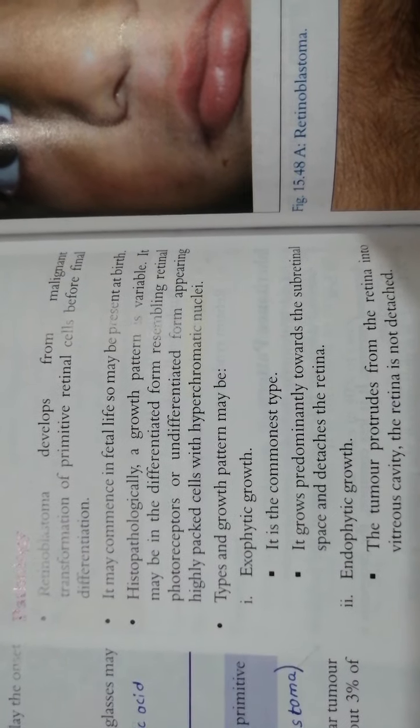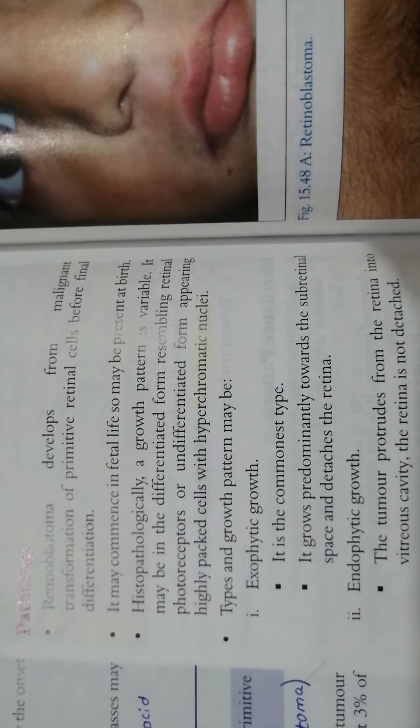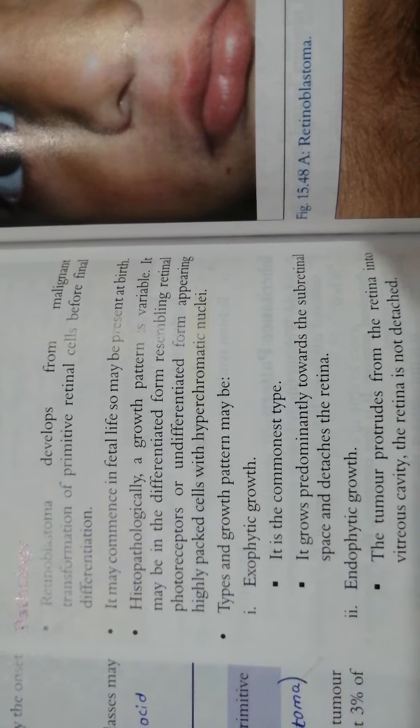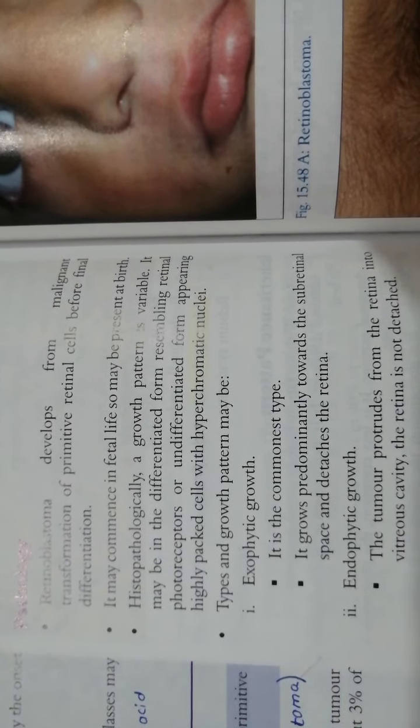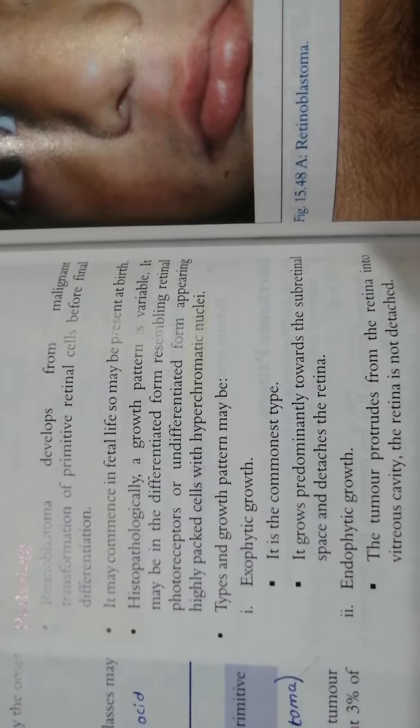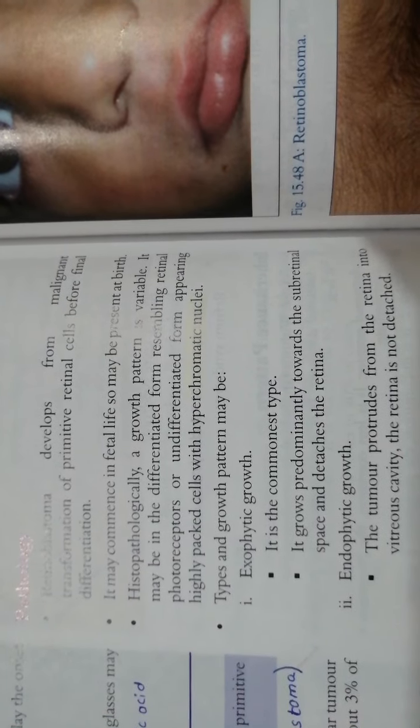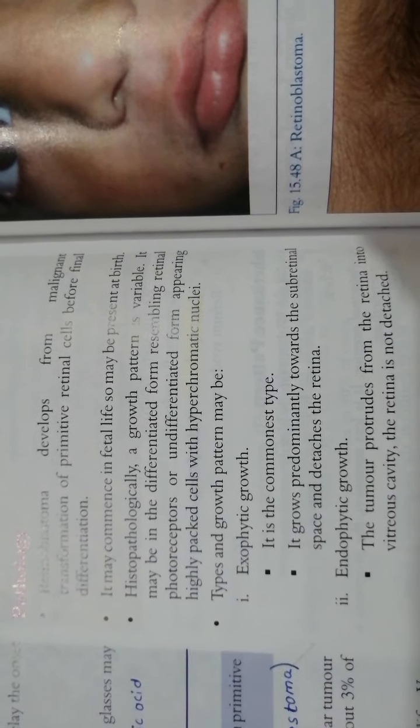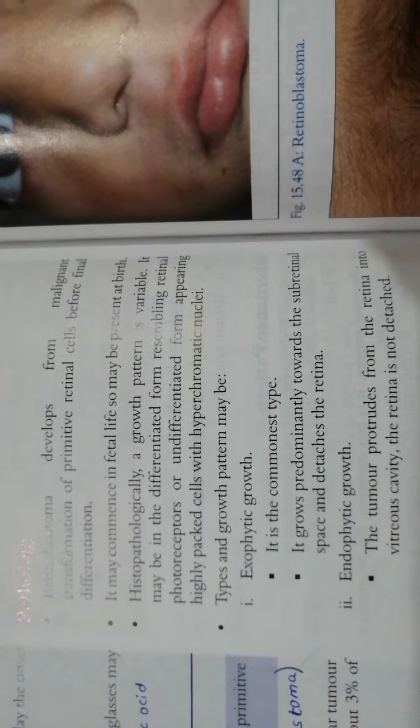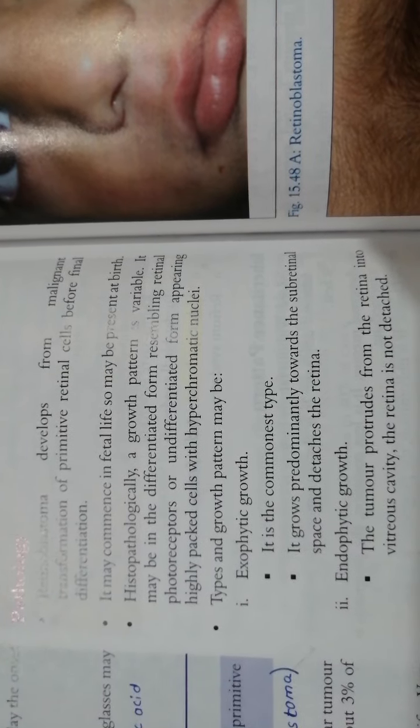Retinoblastoma is derived during fetal life from retinoblasts, basically from their uncontrolled differentiation. If you talk about the histopathology, there is a lot of variability. Undifferentiated cells can be composed on the cells and differentiated.